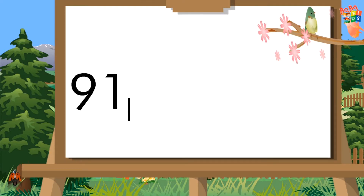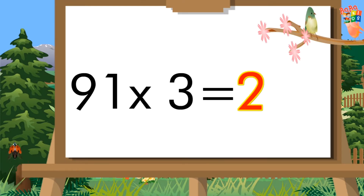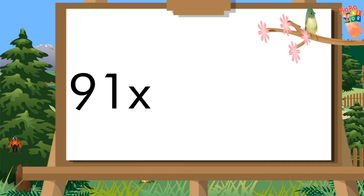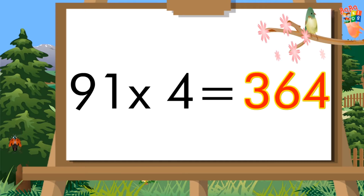Ninety-one threes are two hundred seventy-three. Ninety-one fours are three hundred sixty-four.